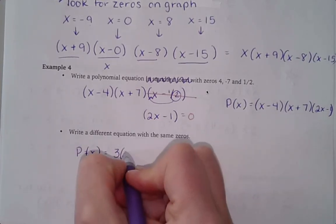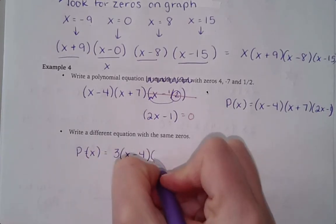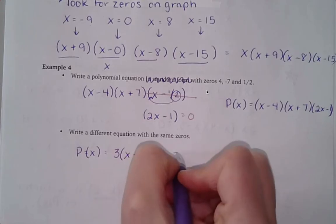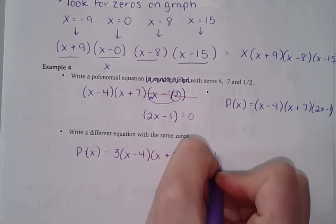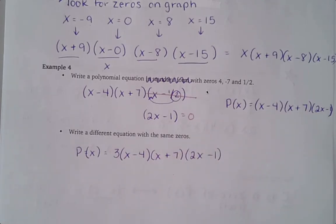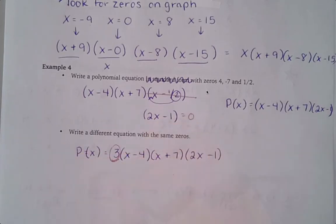So x minus 4, next one, x plus 7, and 2x minus 1. So that's a possibility, to do something like this. And this doesn't have to be 3. It can be any number you want. So you can make an infinite number of equations. They'd all be a little bit different, but they'd all have zeros in the same place.